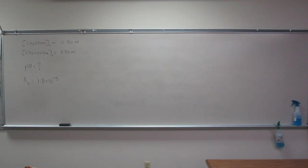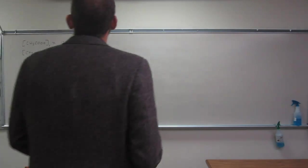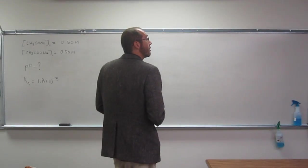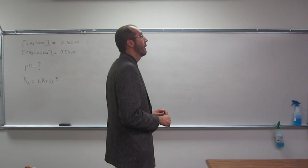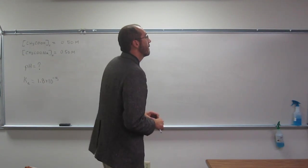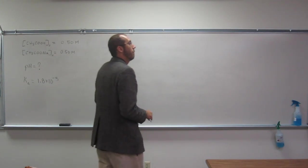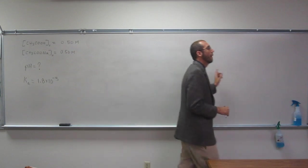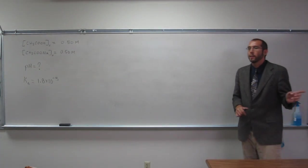So let's do one of these equilibria of acid-base buffer systems. This one says calculate the pH of an acetic acid buffer solution consisting of 0.50 molar acetic acid and 0.50 molar sodium acetate.